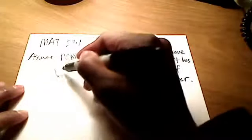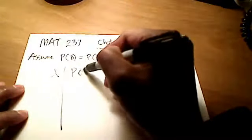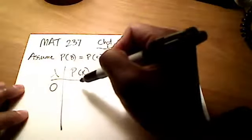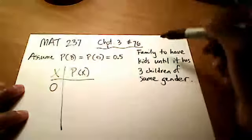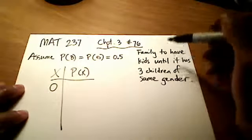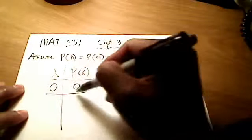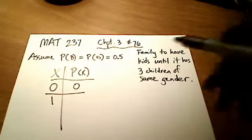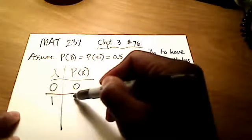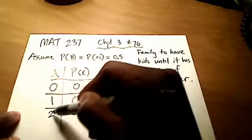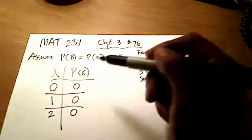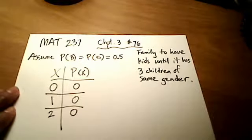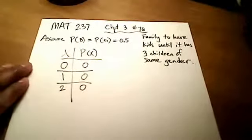For the early cases on WebAssign: if you have zero kids, the probability of having three of the same gender is zero. If you have one child, the probability is still zero. Same thing for two children — still zero. Things get more interesting once a family has a third child.